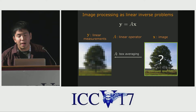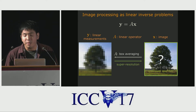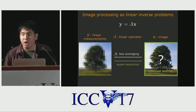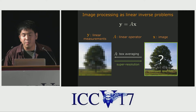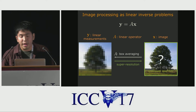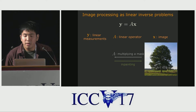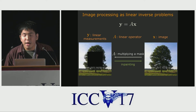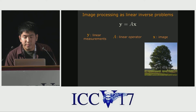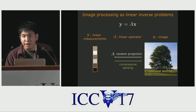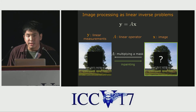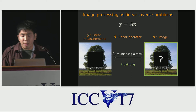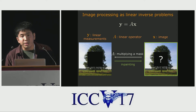Many image processing problems can be formulated as solving a linear inverse problem, where we are given noisy linear measurements Y and the linear operator A, and we try to reconstruct the image X. Different linear operators A formulate different image processing problems. For example, when A represents box averaging, we have an image super-resolution problem. For image inpainting, A represents multiplying with a binary mask. For compressive sensing, A represents random projection. Despite the simple relationship between X and Y, linear inverse problems are usually extremely difficult to solve due to their underdetermined nature.